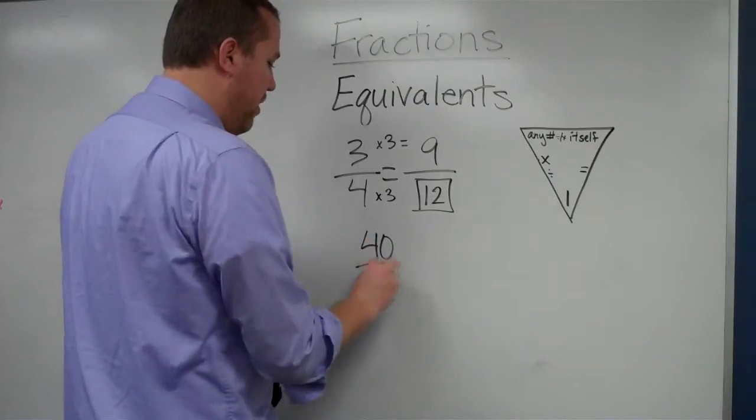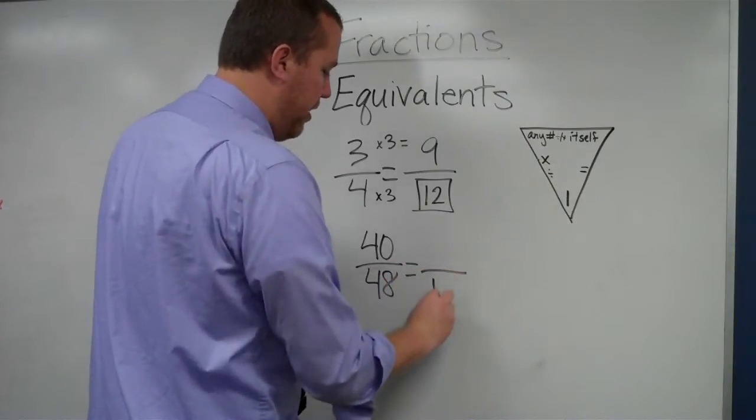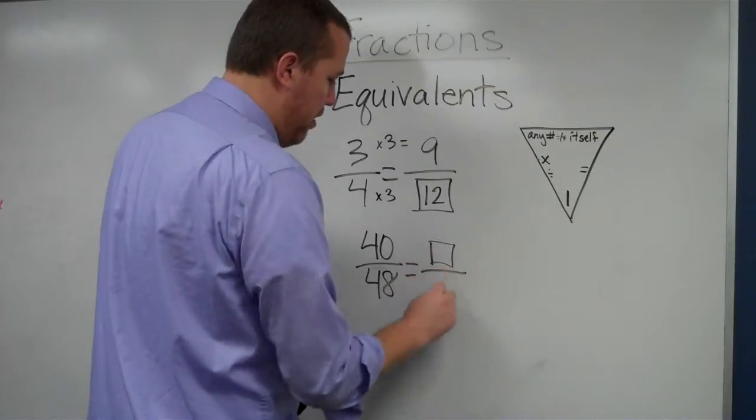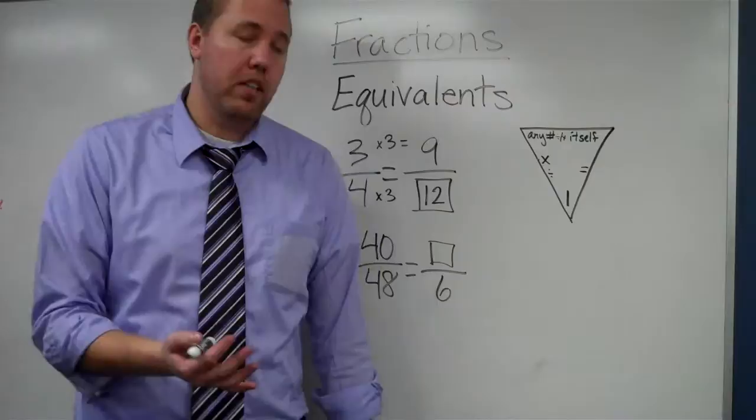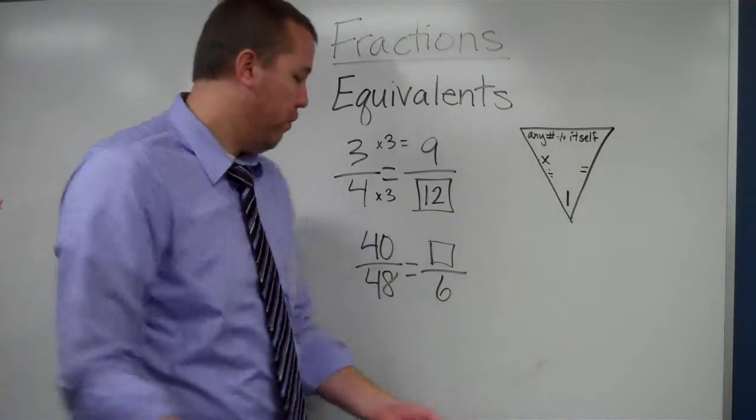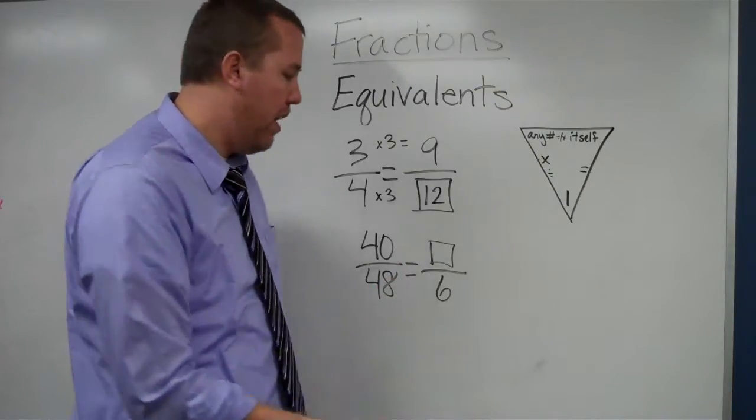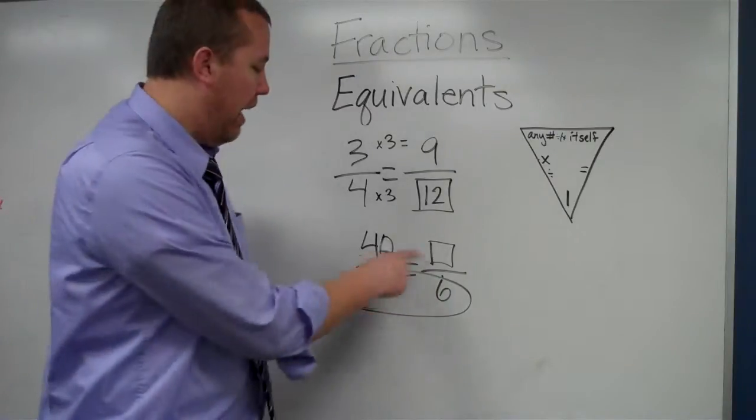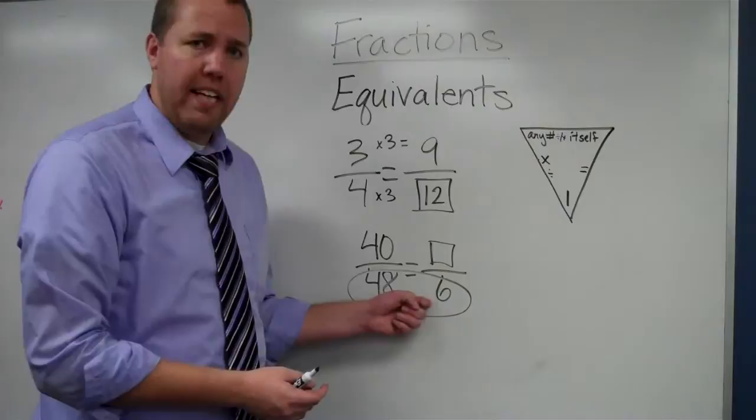Say 40 over 48 equals blank over 6. So, what do I do? 48 divided by what equals 6, or 6 times what equals 48? I can do it either way. But I start with what I know. This I can figure out. I have no clue. There are plenty of answers for that, but there is only one answer for this.